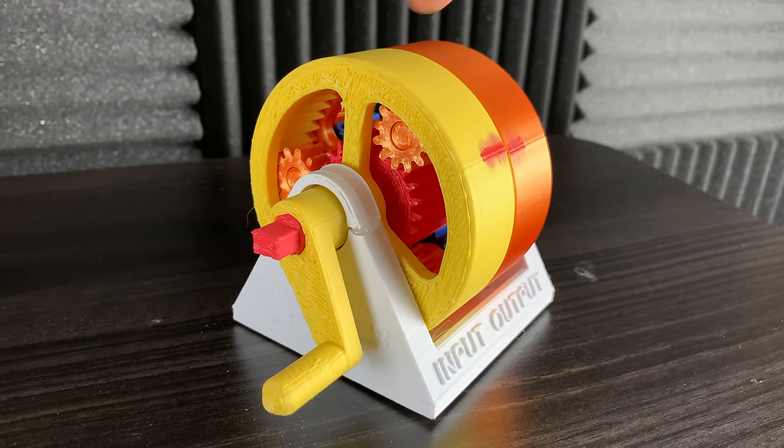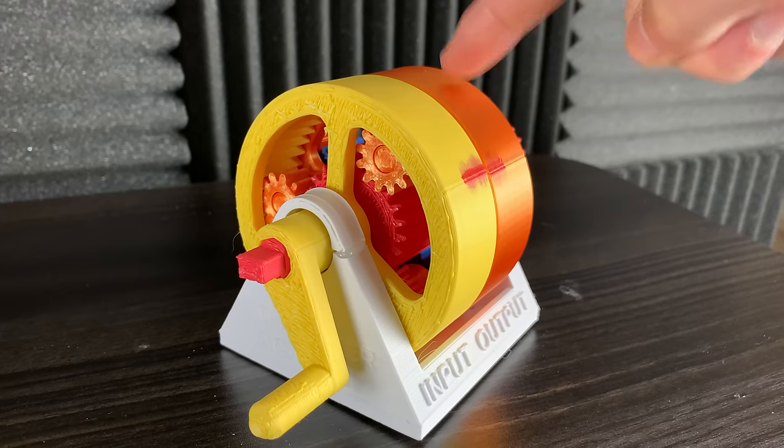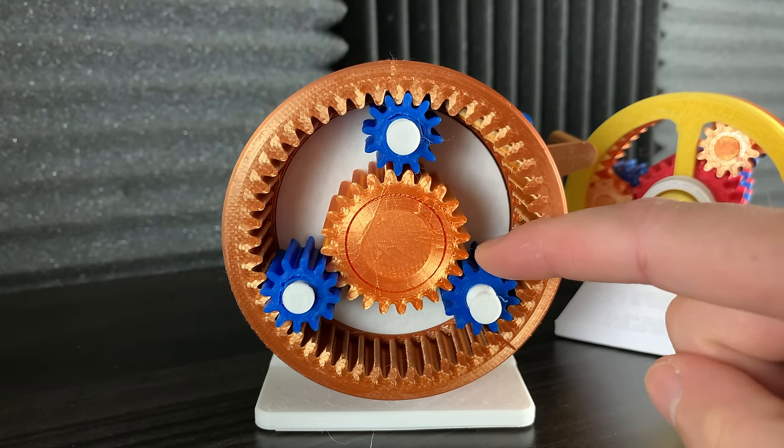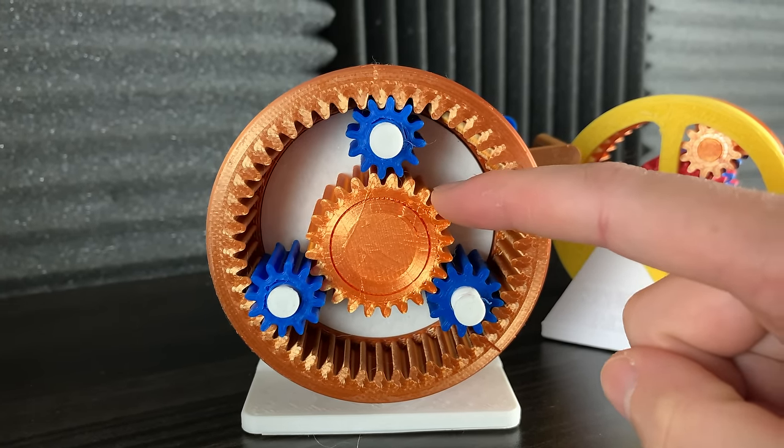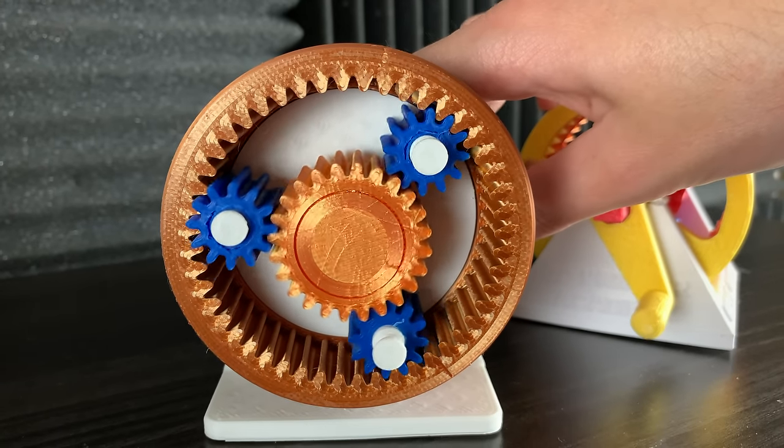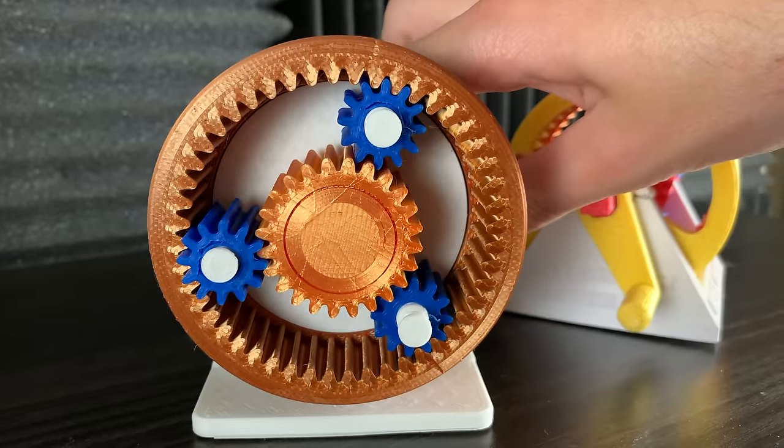This model of an automatic transmission contains two planetary gear sets. A planetary gear set contains a ring gear, planet gears, and a sun gear. If I rotate the sun gear, you can see the planet gears rotating inside of the ring gear.